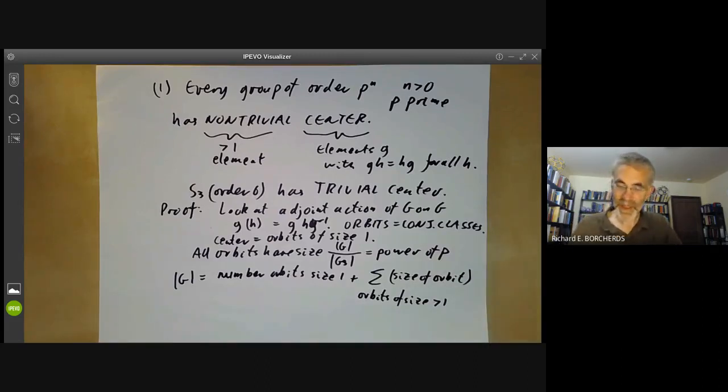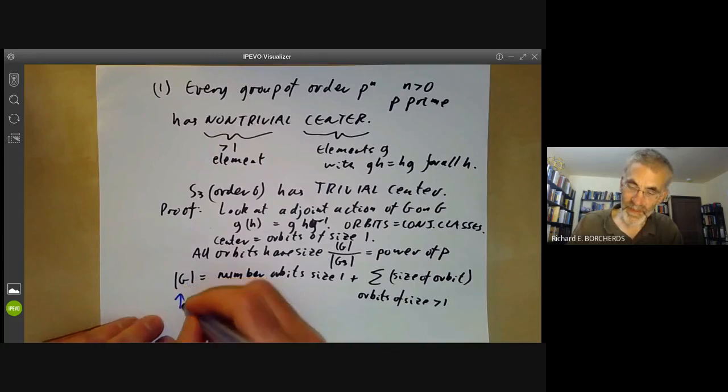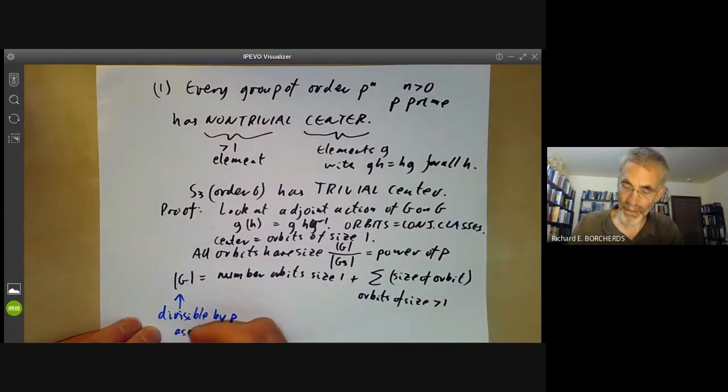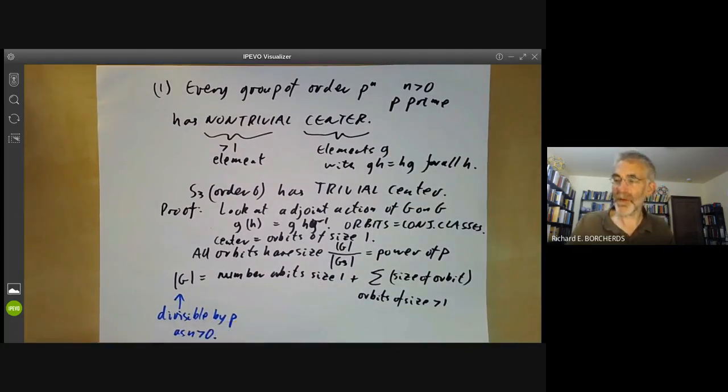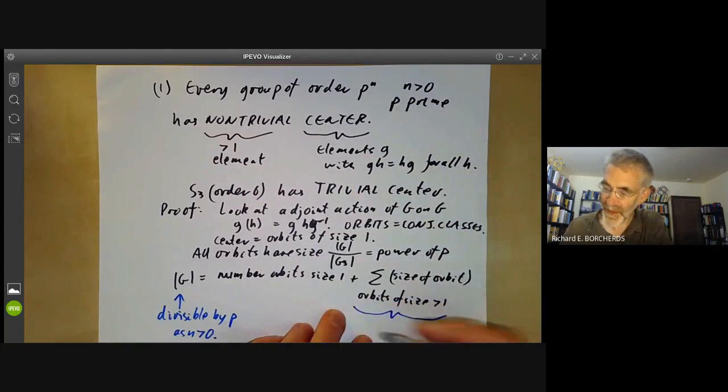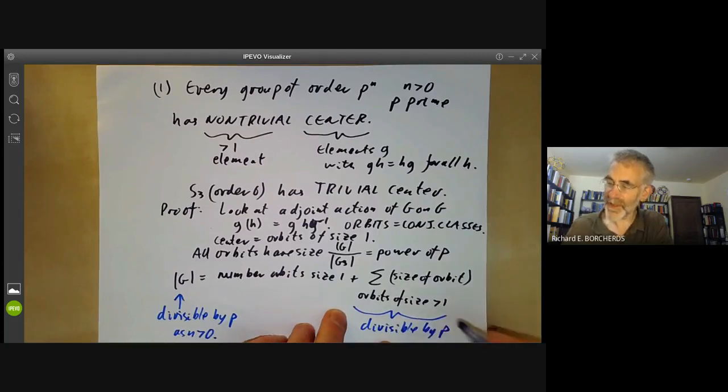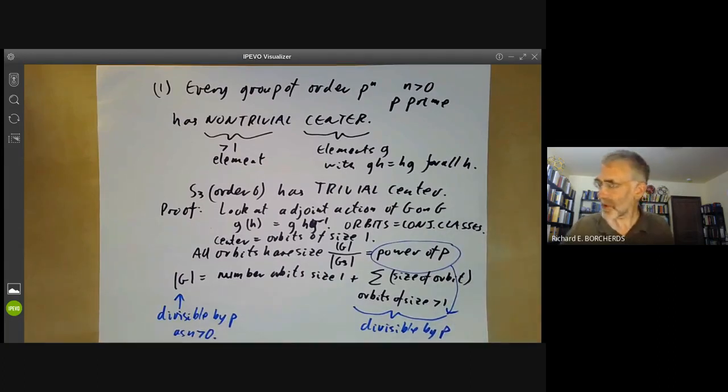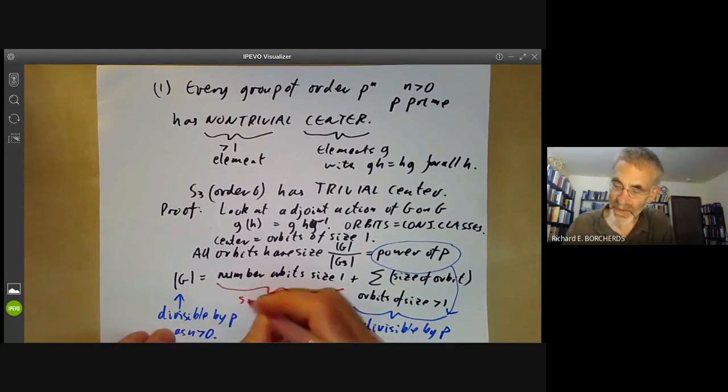And now let's look at this. Well, this term here is divisible by P because we assumed N was greater than 0. Of course, if the group is order P to the 1, then it doesn't have a non-trivial centre. So this bit here is divisible by P because each term is a power of P.